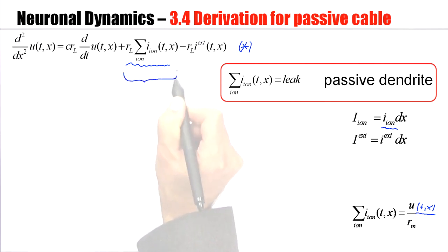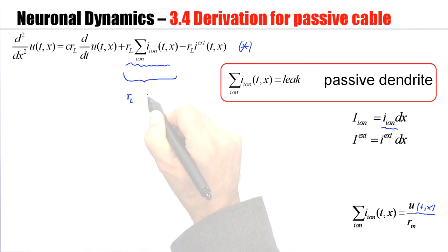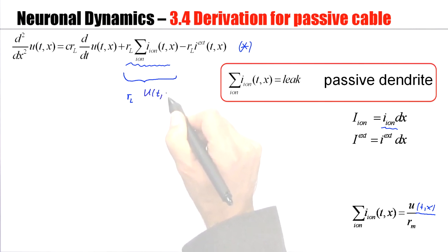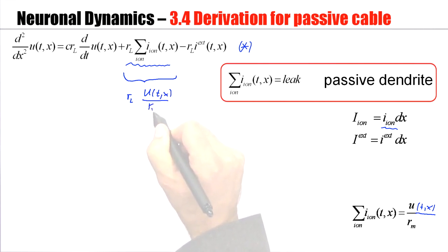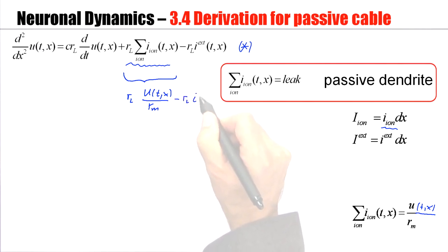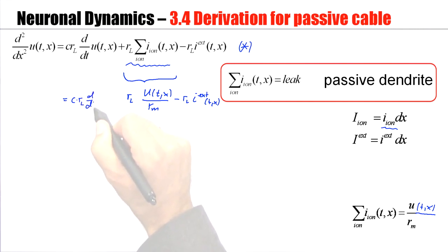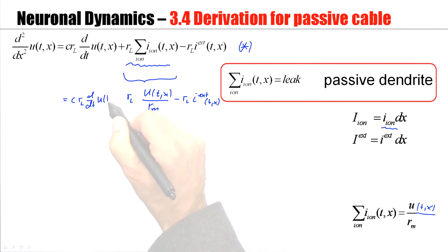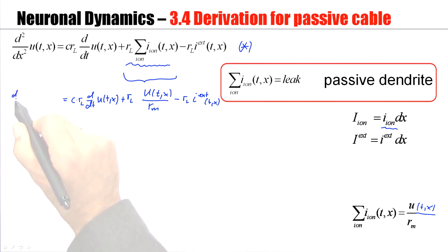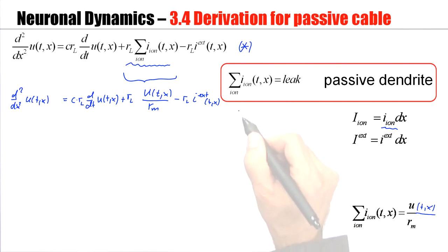So I insert u — I have rl and then I have u of t and x divided by the little rm, the membrane resistance. I copy the other terms: minus rl times i_x external. I have a little rl times d/dT of u(t,x). And these different terms give the right-hand side of the equation. On the left-hand side I have the second derivative of the voltage with respect to the spatial coordinate x.